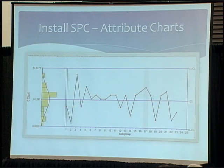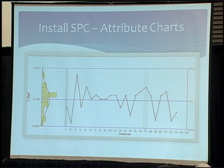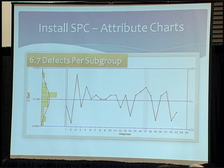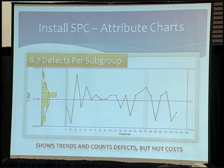The other type of control charts are attribute charts, where we're counting defects. There are a lot of activities, especially in the name of Six Sigma, where we count up our defects and tally those. Here's my C chart. On average, every sample I take I'm getting 6.7 defects per subgroup. Again, it shows trends and defect counts, but this is still not addressing the cost.